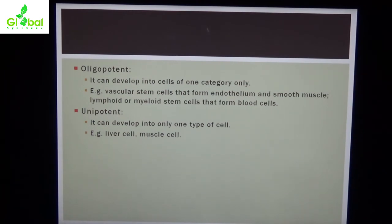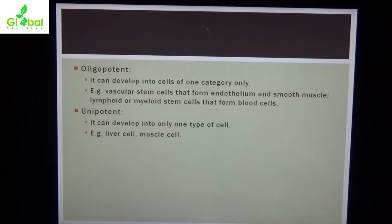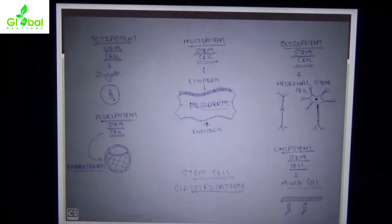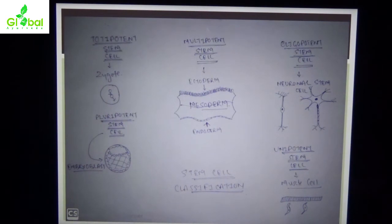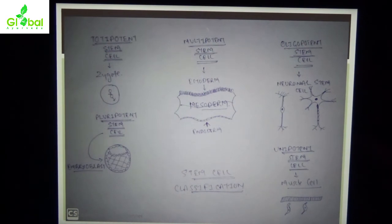Unipotent stem cells can develop into only one type of cell — for example, liver cells and muscle cells. In summary: totipotent stem cells form both embryonic and extra-embryonic parts, with the zygote as the example formed by fusion of sperm and ovum. Multipotent stem cells form ectoderm, mesoderm, and endoderm — different organs.